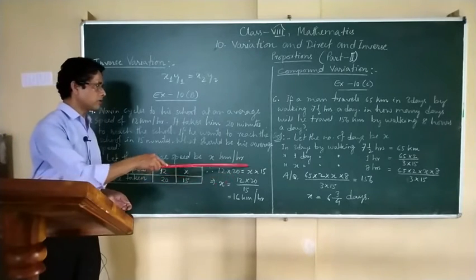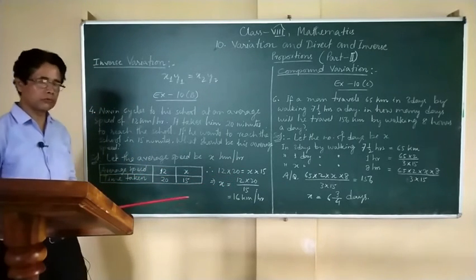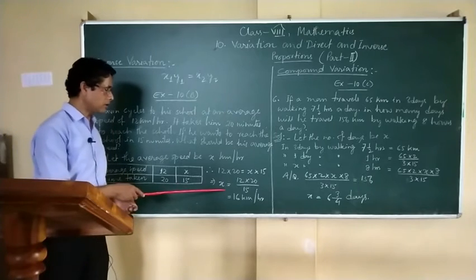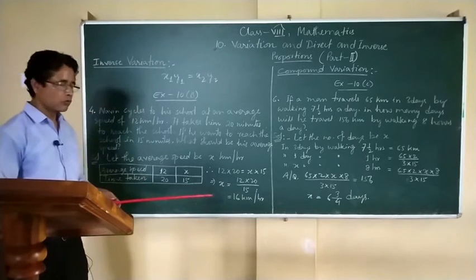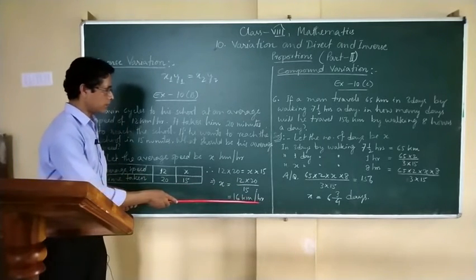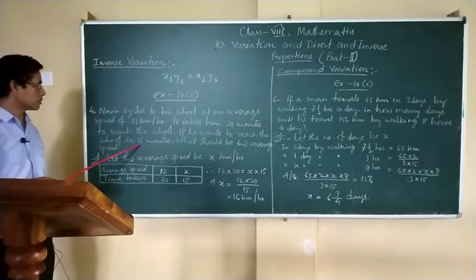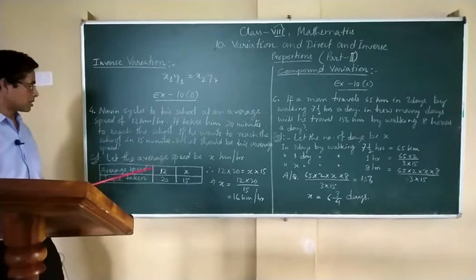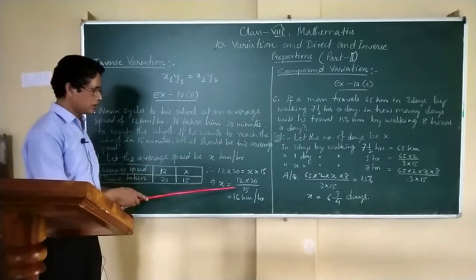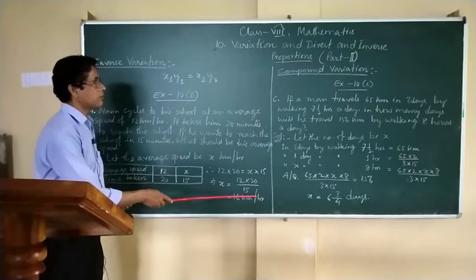Do the multiplication to find out the value of x, the unknown quantity or the unknown variable. After solving it, we get 16 km per hour. What does it mean? If Nabeen wants to reach the school in 15 minutes, his average speed should be 16 km per hour.